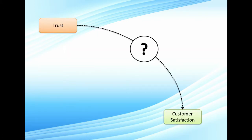What is the first step? We start with the variables trust and customer satisfaction. I'll be using red lines to indicate an opposite relationship — that means more equals less. And blue lines to indicate a positive relationship, which means more equals more.